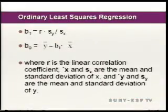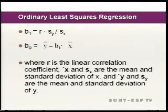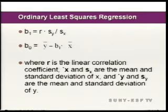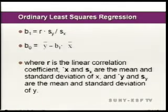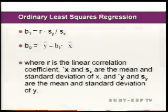Beta1, the slope, is equal to r — the linear correlation coefficient — times the standard deviation of y divided by the standard deviation of x. Beta0, the y-intercept, is equal to the mean of y minus the slope times the mean of x. Once we have these shortcut equations, we can then find our regression line.